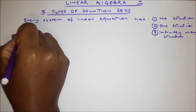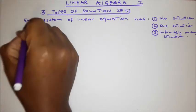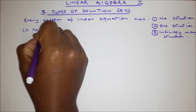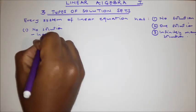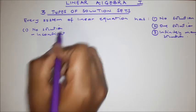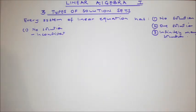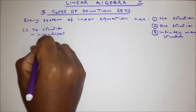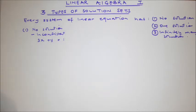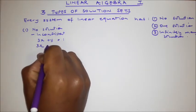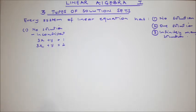So first and foremost, let us look at a linear system that has got no solution. Linear systems with no solution are called inconsistent. Let me write this linear equation right here: 3x plus y equals 1, and then 3x plus y equals 2. So this is an example of a linear system with no solution.